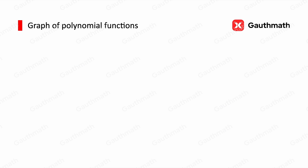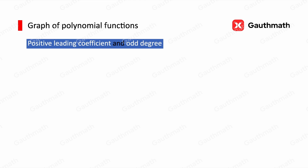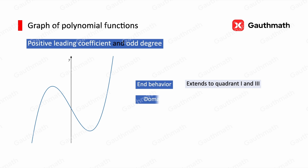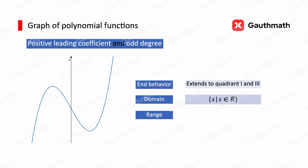Now let's look at the graph of polynomial functions. There are four scenarios. For the first scenario, if the polynomial has a positive leading coefficient and odd degree, we can use a cubic function as an example. The graph extends to quadrant 1 and quadrant 3 — that is the end behavior of this function. For the domain, the graph extends to positive infinity and negative infinity, so x belongs to all real numbers. For the range, the graph also extends to positive and negative infinity, so y also belongs to all real numbers.